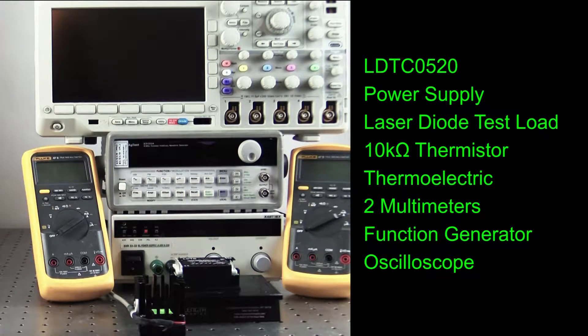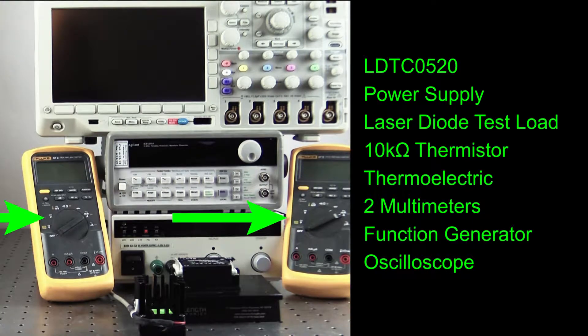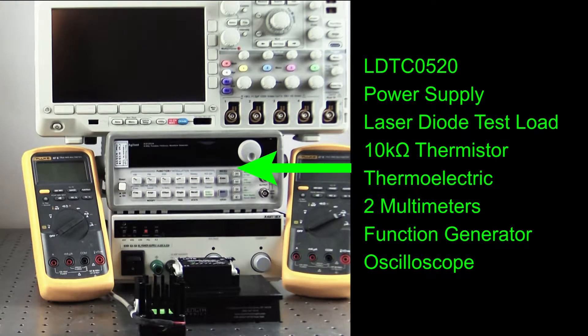In this video, we'll set up the LDTC-0520 using an adjustable voltage power supply, a laser diode test load, a 10 kOhm thermistor, a thermoelectric, two multimeters, a function generator, and an oscilloscope.